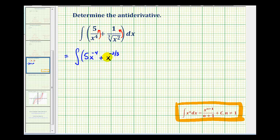And now we can integrate this with respect to x by applying the power rule. So the antiderivative of five x to the negative fourth, we'll have five times x to the negative four plus one divided by negative four plus one, plus x to the negative two-thirds plus one divided by negative two-thirds plus one, plus our constant of integration.